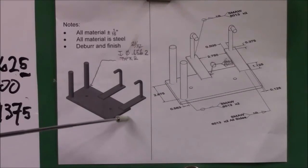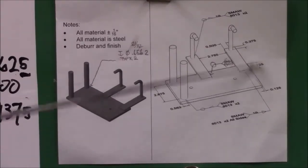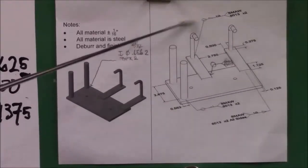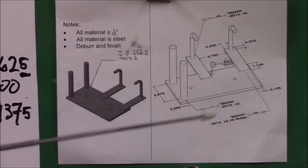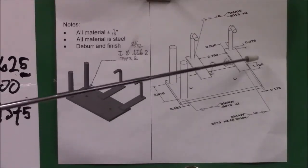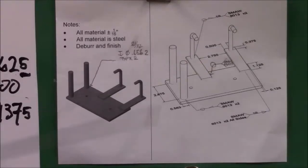The second page of the blueprint gives you more information when this thing gets together. It gives you welding symbols and it also gives you dimensions where everything fits. The one thing that I like to do here in the shop is to give a 3D rendition of the project itself.